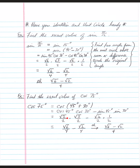Cosine(45°) = √2/2, cosine(30°) = √3/2, sine(45°) = √2/2, and sine(30°) = 1/2. This gives √6/4 minus √2/4. It's fine to leave these separated or combine into one fraction.